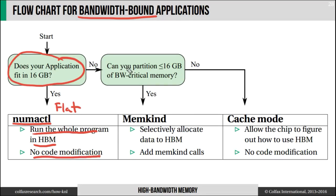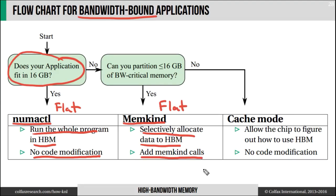If your application requires more than 16 gigabytes and you know exactly which objects are bandwidth-critical, and you can partition out the bandwidth-critical data containers and stage data for high bandwidth access, then use the flat memory mode and a special library called memkind to selectively allocate certain data containers to high bandwidth memory. You do have to modify your code in this case. Finally, if you don't know which objects are bandwidth-critical in your application, then simply use cache mode — do not modify your code and allow the chip to figure out at runtime how to use high bandwidth memory.